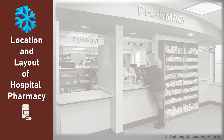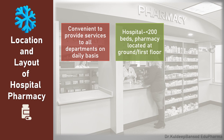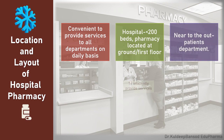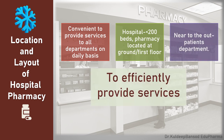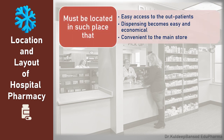Now, the question is: where should the pharmacy be located? The location is such that it should be convenient to provide services to all departments on a daily basis. In a hospital of bed size near 200, the pharmacy should be located at the ground floor or first floor, near the outpatient department. It should be easily accessible to the outpatient, and compounding and dispensing becomes easy, economical, and convenient to the main store to transfer the goods.